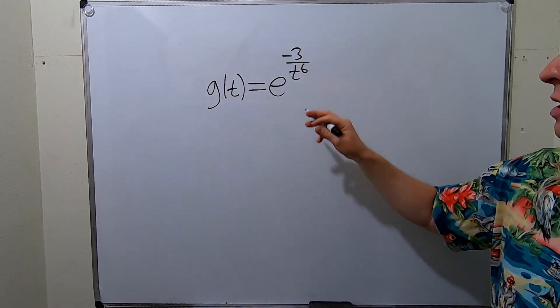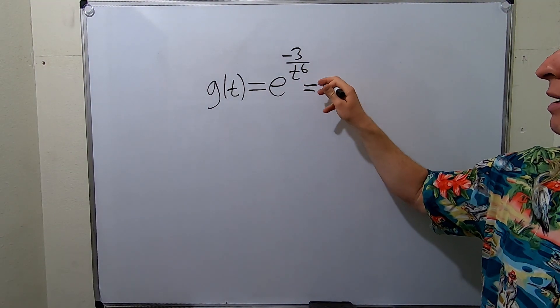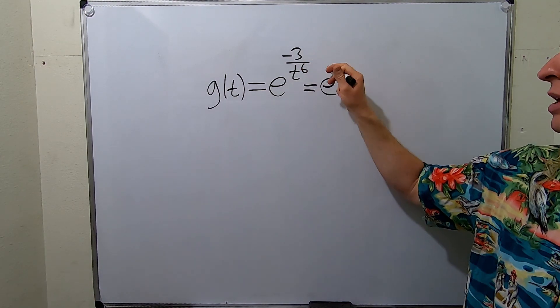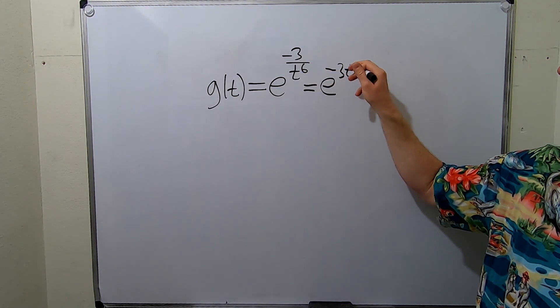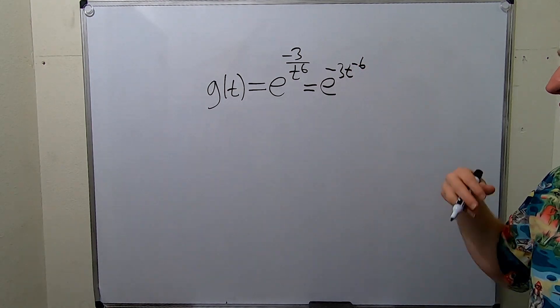Because we have to do that, we'll start by rewriting this. We'll take this t to the 6 and bring it up like this as t to the negative 6. Now let's go ahead and take the derivative, and you'll see this makes the derivative of the inside function much easier.